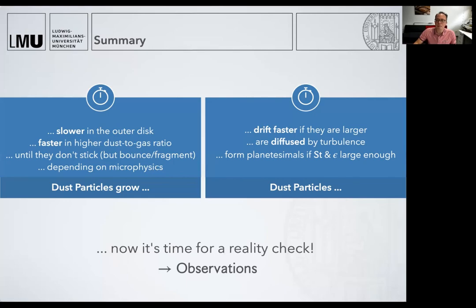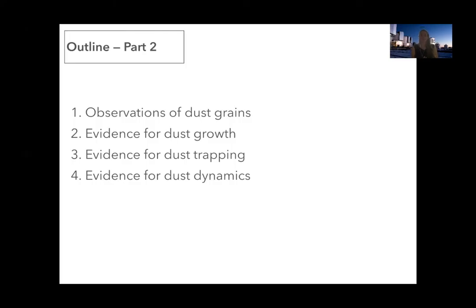Thank you very much, Till. So in the second part of the talk, we're going to confront the theory of dust evolution to observations. We will try to address all the points that Till explained, but from an observational point of view. We'll first start by explaining how we can observe dust grains of different sizes. Then I will briefly discuss a very small selection of observational results that allow us to investigate whether dust grains can grow, whether dust grains are trapped in regions of high pressure, and whether the dynamics of dust is different for different dust sizes due to the fact that they are evolving in a gaseous environment.